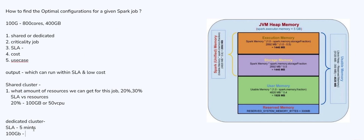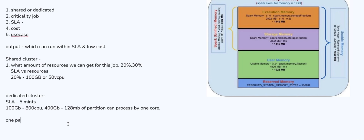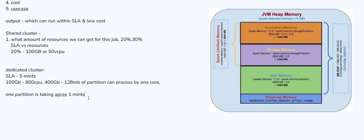So to process the 100 GB of data, we have calculated 800 cores and 400 GB of memory. Each partition is 128 MB, and 128 MB of partition can be processed by one core. Let's assume one partition is taking approximately one minute. That is a very ideal case — when it comes to the real case these values will definitely vary, but I'm taking one example with assumption numbers to make the concept clear.